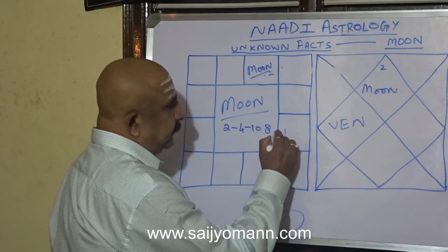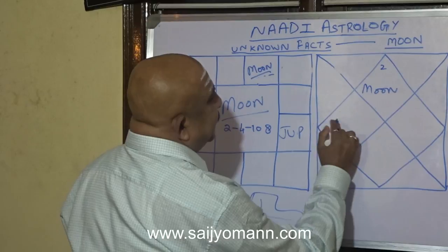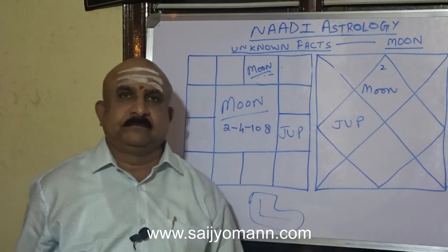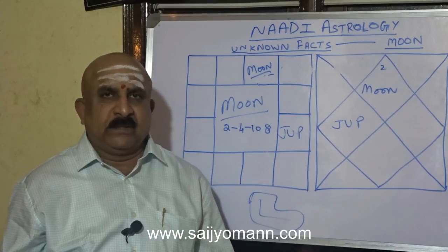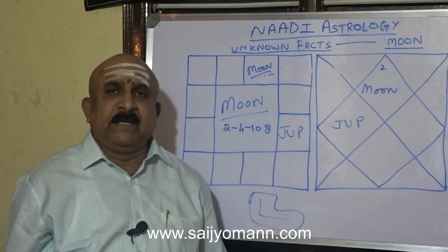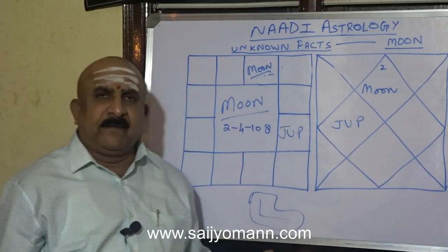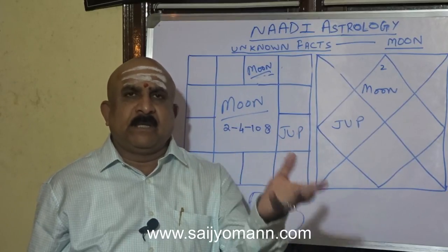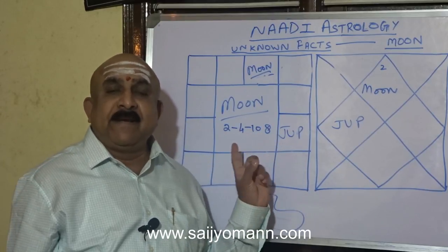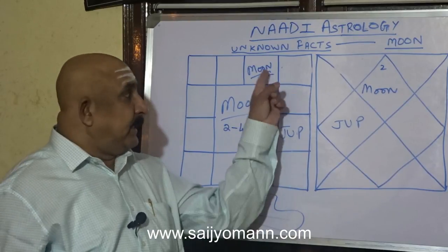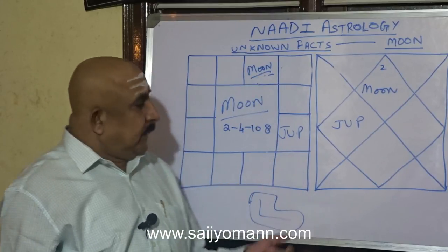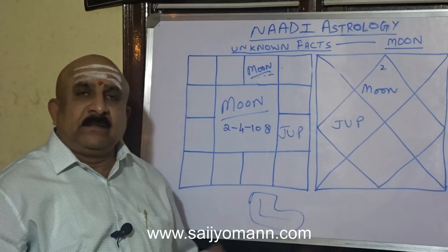When Jupiter sits in the 4th house from Moon, concentrating on the mother — the native's mother — immaterial of any sign or rasi, the mother's family is a popular household. They will have a name for that house. I am talking about the maternal grandfather or grandmother's house, the mother's native house.